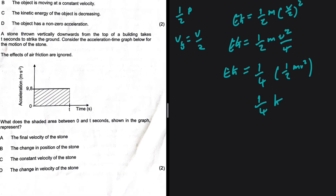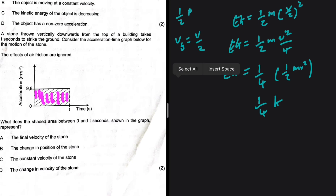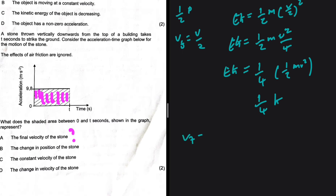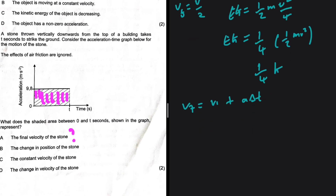Question 1.2: a stone thrown vertically downwards takes t seconds to strike the ground. What does the shaded area from 0 to t on the acceleration-time graph represent? The area under an acceleration-time graph gives a·Δt.